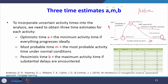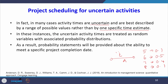If the activity completion time follows an empirical distribution, the mean is found as E(x) = Σ x·P(x). For example, mean = 5×0.1 + 6×0.5 + 7×0.4 + 8×0.1. This is the way to find the mean of an empirical distribution.